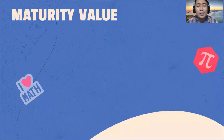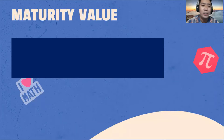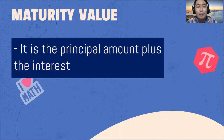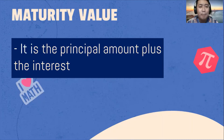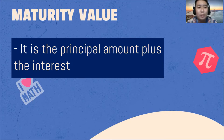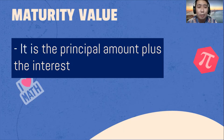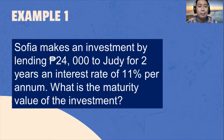Maturity value is simply the principal amount plus the interest. That is the maturity value or final value of the given simple interest.